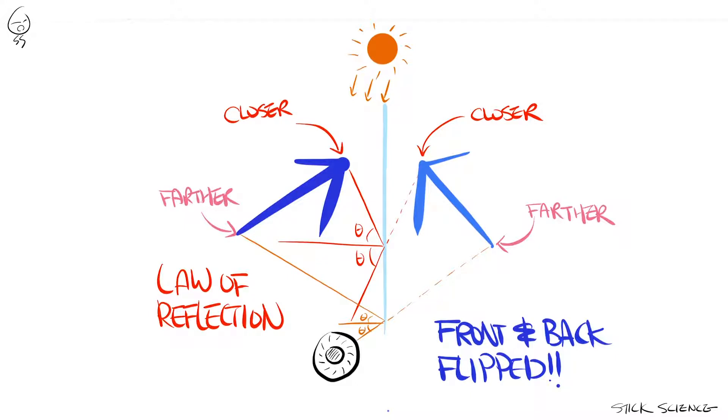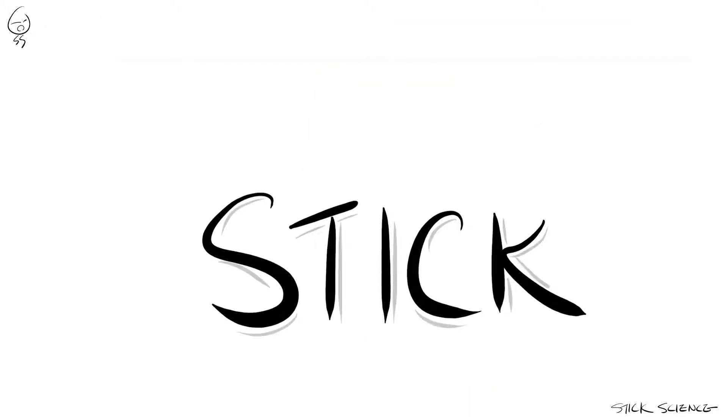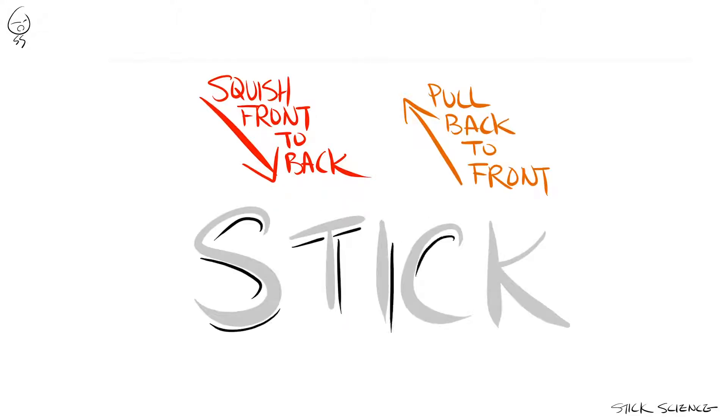But wait you might say, that still doesn't explain why letters are flipped horizontally when looked through a mirror. Well that's true. Front and back flipping doesn't have much of an effect when all you're dealing with are signs. Squish the front of the sign through itself to the back and vice versa, and you still have the same sign with the same letters written on them, in the same order.